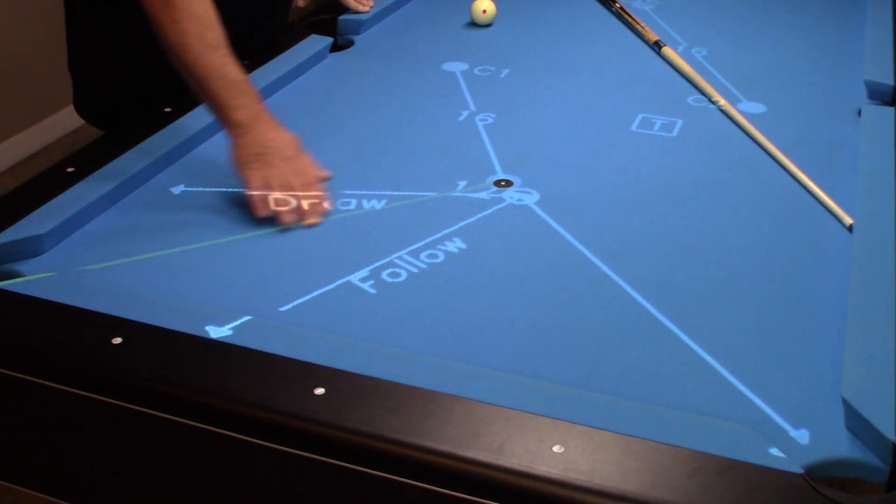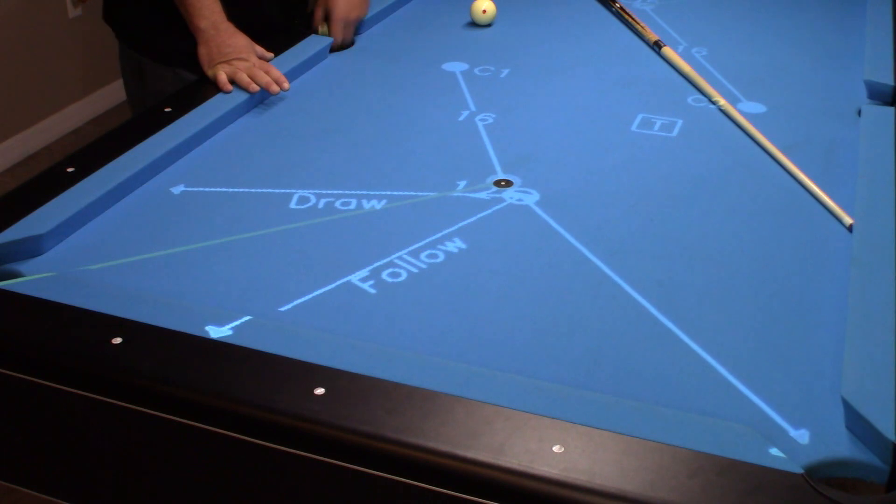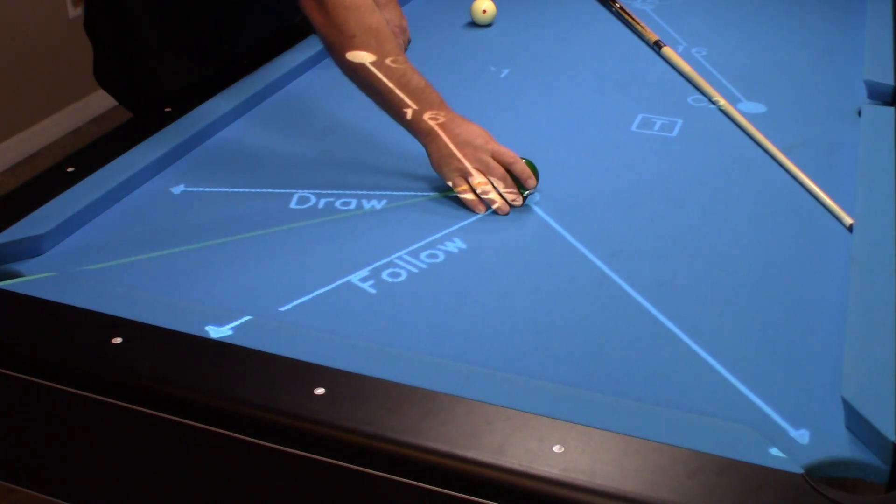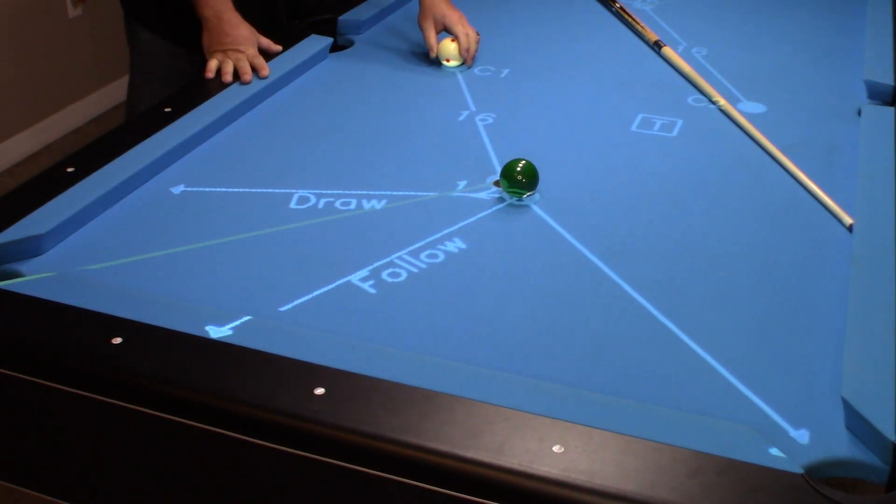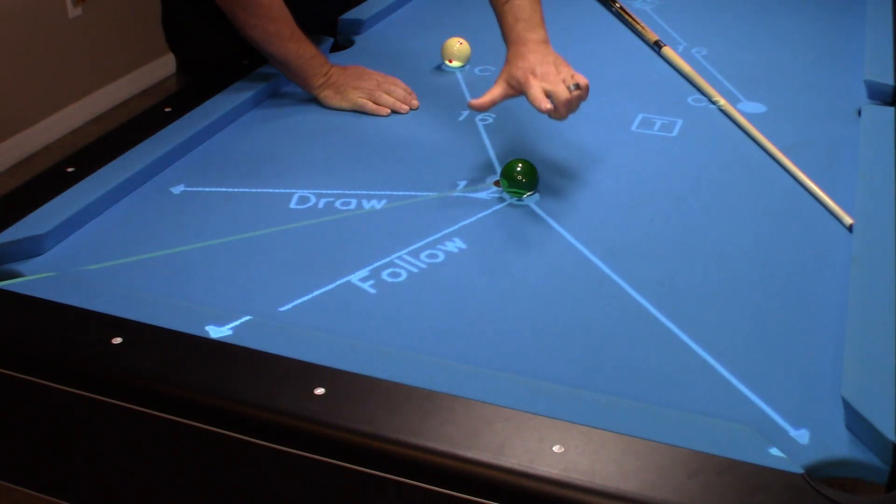I want you to be able to understand the tangent line. So remember, let's say that's my object ball. Here's my cue ball. And what I could do is do the 90 degree.